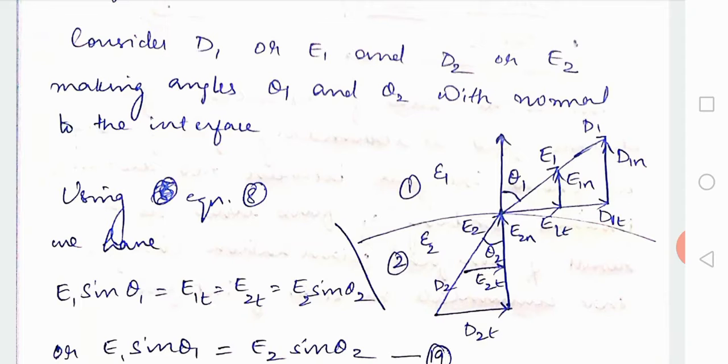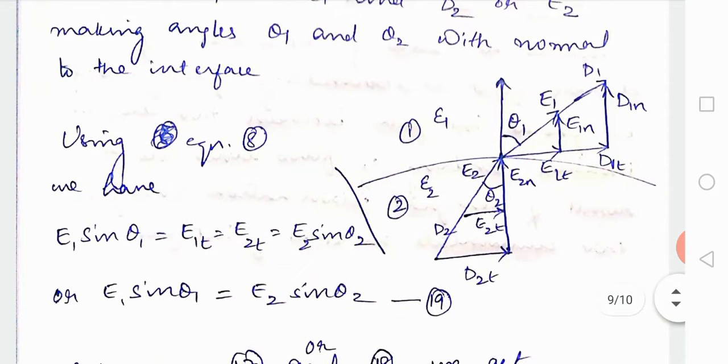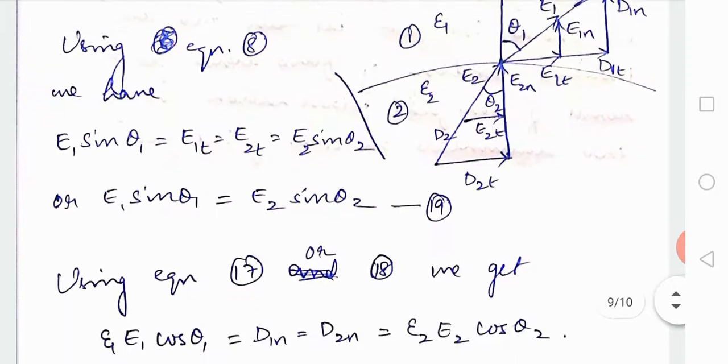Using equation 8 we have E1 sin theta1 equal to E1t. From the figure you can see E1t is equal to E1 sin theta1 and E2t is equal to E2 sin theta2, or it can be written as E1 sin theta1 is equal to E2 sin theta2. That is your 19th equation.